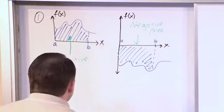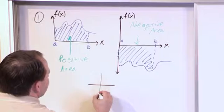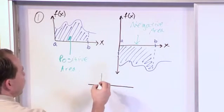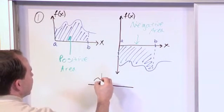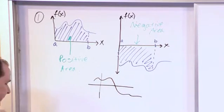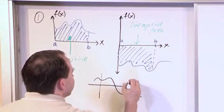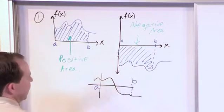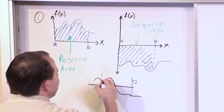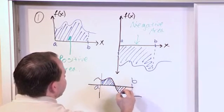And just so you know, if for whatever reason, we'll draw another one here, if for whatever reason your graph, part of it is above the x-axis and part of it is below the x-axis like this. Let's say you're calculating, here's let's say b and let's say a is the origin here. Then what you're really calculating is you're calculating the area here and the area here.